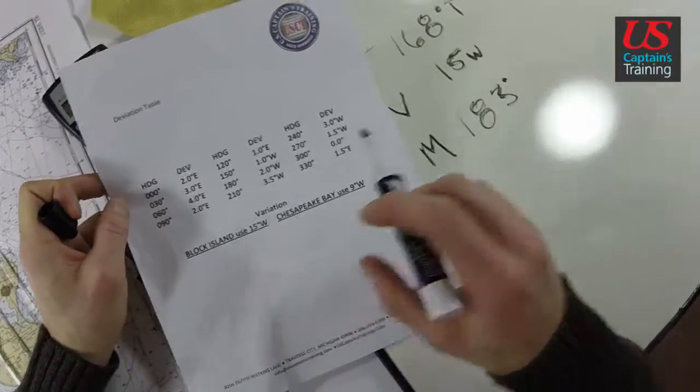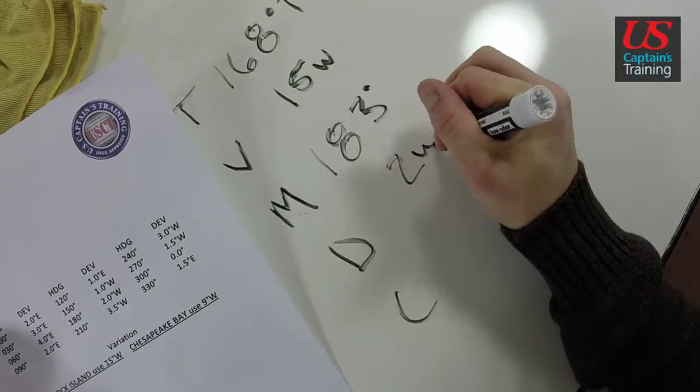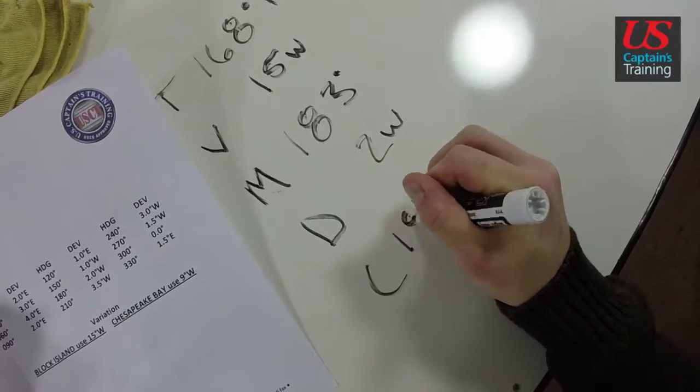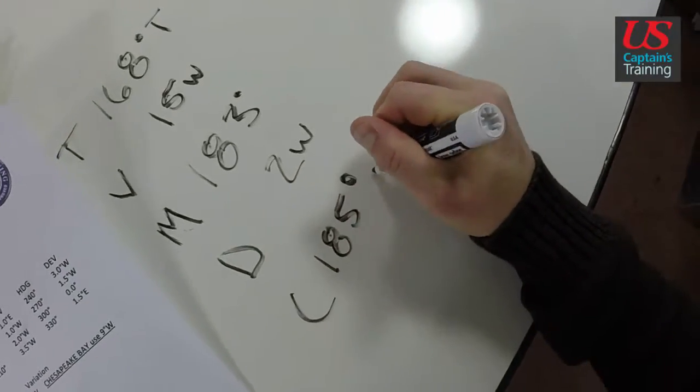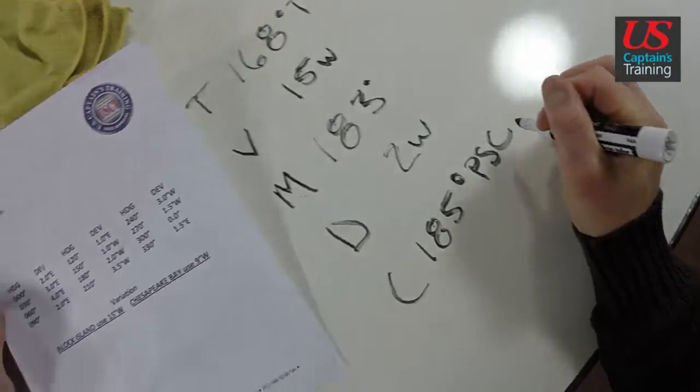2 West - we're going down, we add it West. 185 degrees per standard compass. Now we look for our answer.